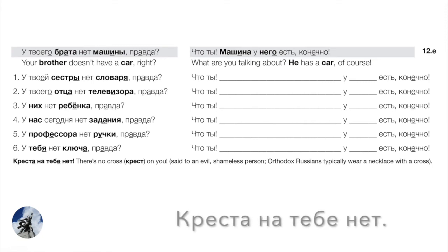A little saying: Креста на тебе нет. We haven't learned на тебе yet — it means 'on you.' A крест is a cross, referring to the cross necklace that Orthodox Christians in Russia wear around their necks. Креста на тебе нет means 'there's no cross on you,' basically meaning you're acting like the devil — so shamelessly that literally there's no cross on you. It's not something you hear every day, but it may come up in literature. A nice example of non-existence with the genitive.